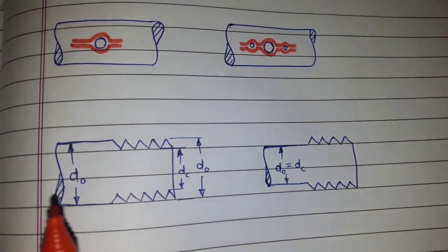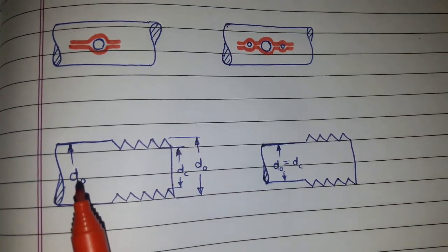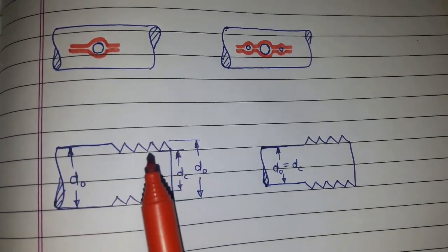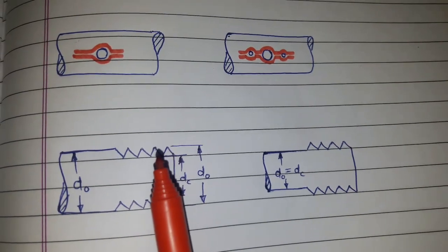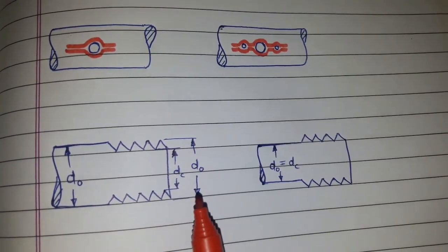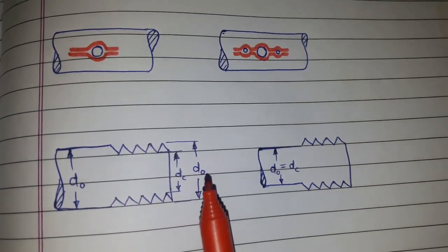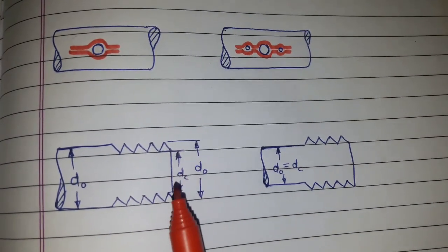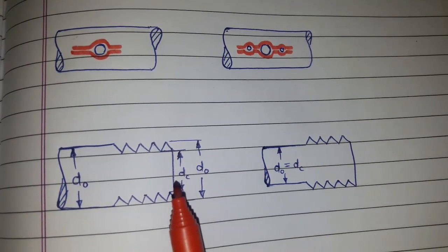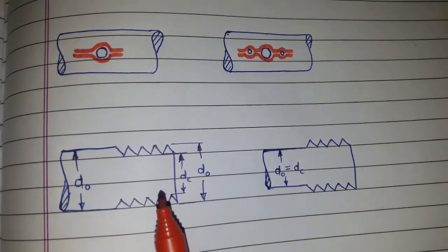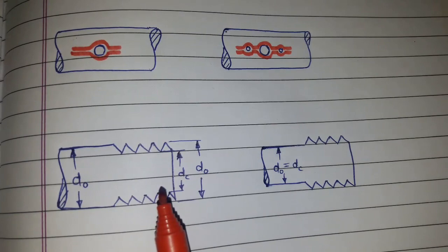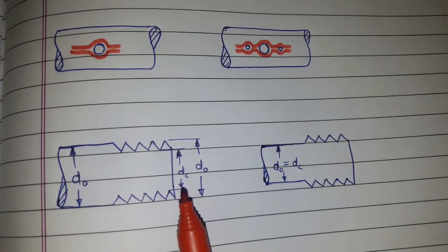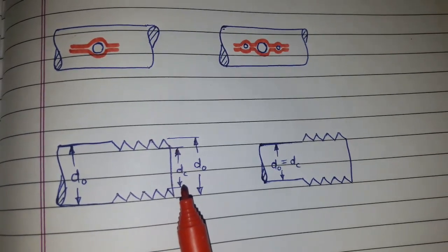For threaded, for example, if DO is the diameter of the shank and this is the threaded section and the outer diameter or the major diameter, if it is DO, equal to the shank diameter and the core diameter of the thread DC, there is a possibility that it may break at the diameter DC because it is the minimum diameter.